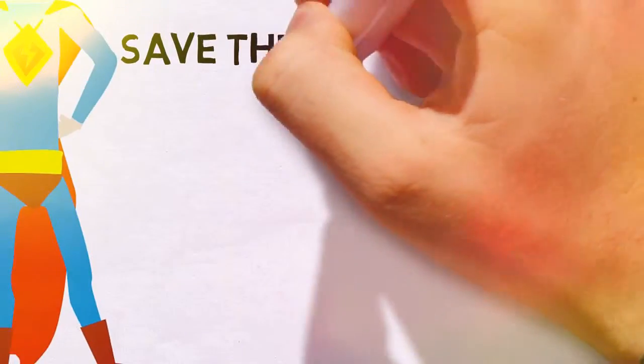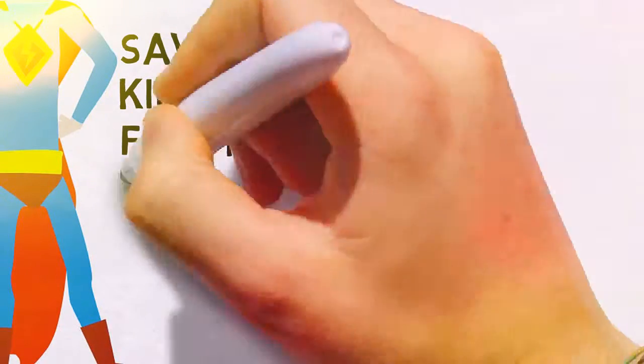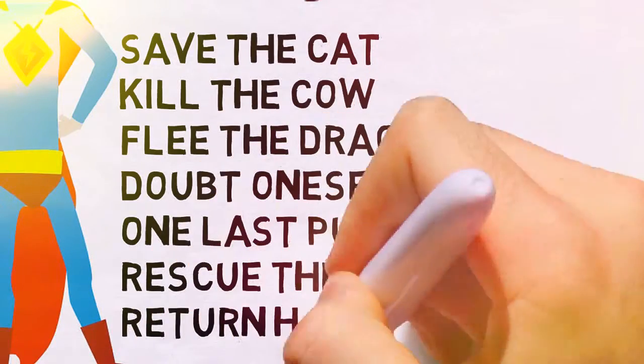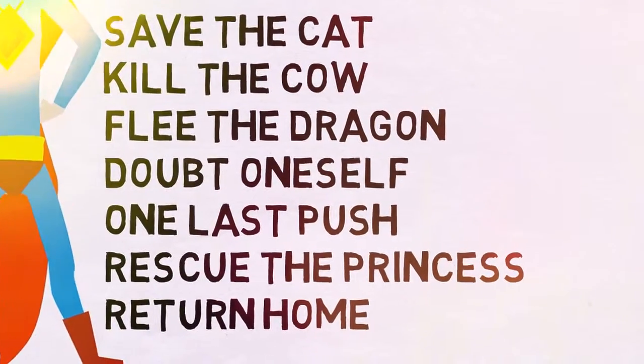Save the cat. Kill the cow. Flee the dragon. Doubt oneself. One last push. Rescue the princess. Return home. So let's look at those seven elements.